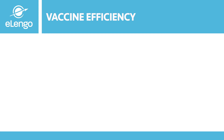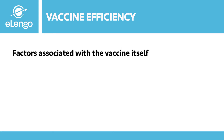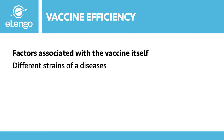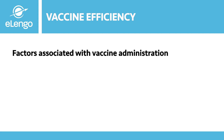Let us now look at factors affecting vaccine efficiency. Factors associated with the vaccine itself: we have different strains of disease-causing organisms, and some of these will not respond properly to vaccination. Sometimes when you have a disease outbreak in the flock, the best way to ascertain what strain you're dealing with is to take a sample to the lab, and the laboratory will advise you accordingly.